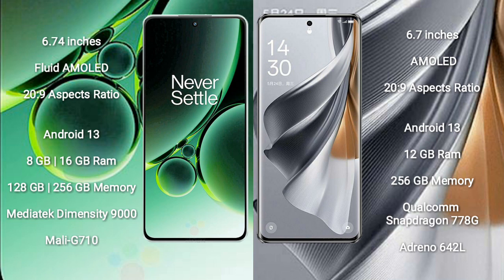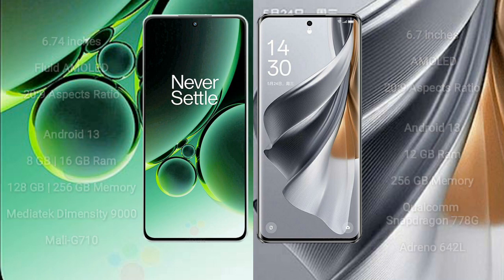OnePlus Nord 3 comes with 8GB or 16GB RAM and 128GB or 256GB internal storage, powered by the MediaTek Dimensity 9000 processor with Mali G710 GPU. Oppo Reno 10 Pro comes with 12GB RAM and 256GB internal storage, powered by the Qualcomm Snapdragon 778G processor with Adreno 642L GPU.